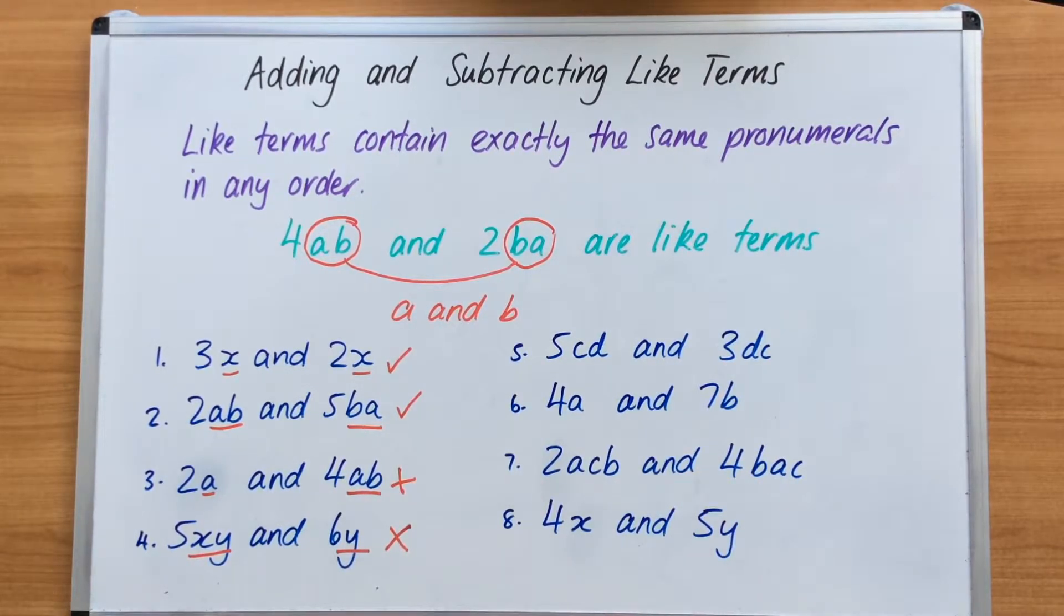Over at number 5 here, we have 5CD and 3DC. CD and DC are related because they have a C and a D. It doesn't matter what order they come in. So they are like terms. 4A and 7B, we know that's not related because the A and the B are completely different. There's no relationship. Therefore, they cannot be like terms.